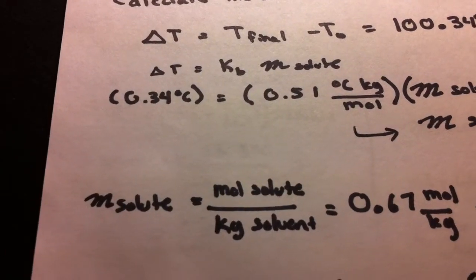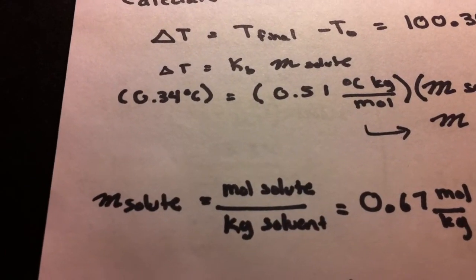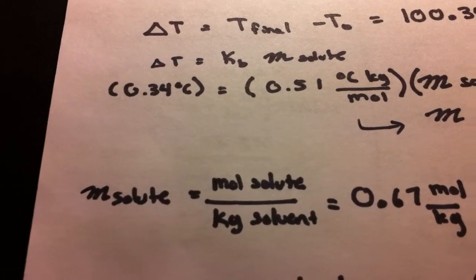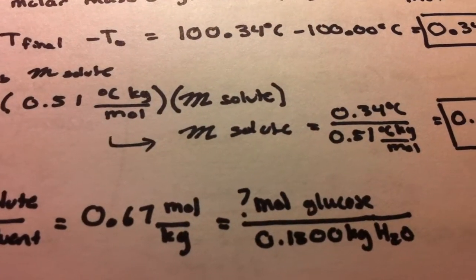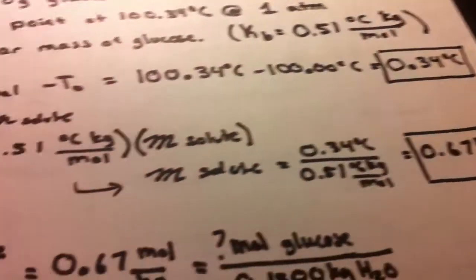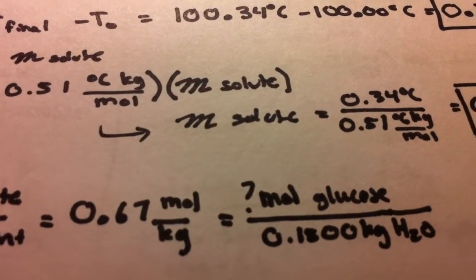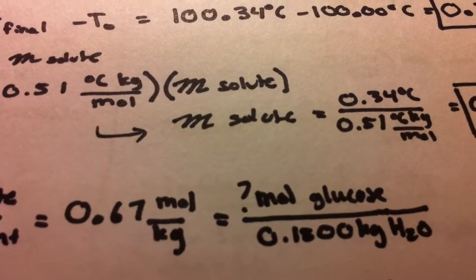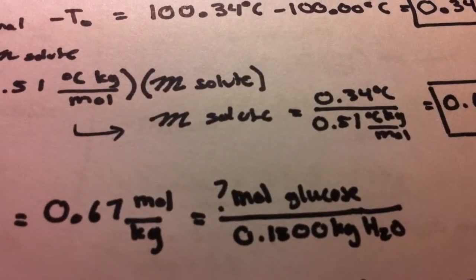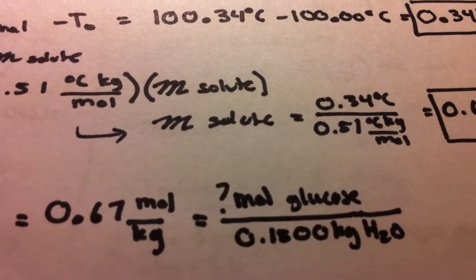Now we take our M solute and we apply the definition of what molality is: moles of solute over kilograms of solvent. So we have our value that we calculated, 0.67, applied to the moles of solute, which in this case would be glucose, over the kilograms of solvent.